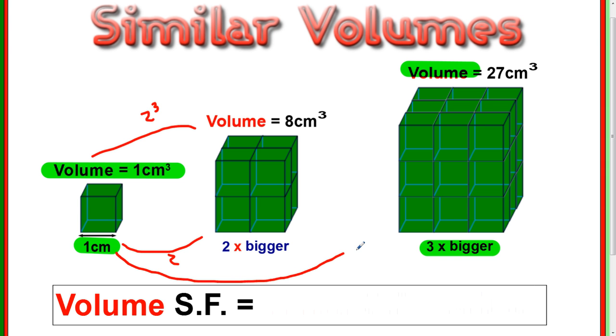And if you think from here to here, it was three. And here to here, it was 27. Again, you can think of it as three cubed. Three times three times three.